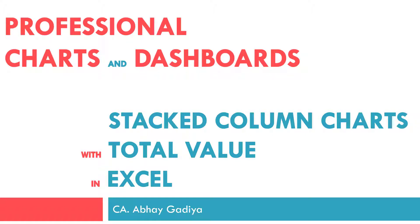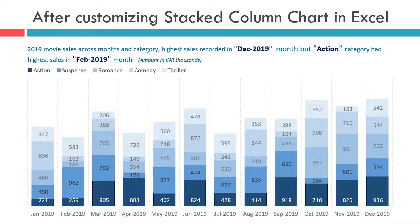Welcome to this video to understand the steps to include total sales value inside a stacked column chart in Excel. In previous videos, we have learned the steps to create a stacked column chart with absolute values and also a 100% stacked column chart to display the proportion of sales from each category to total sales made during that month.